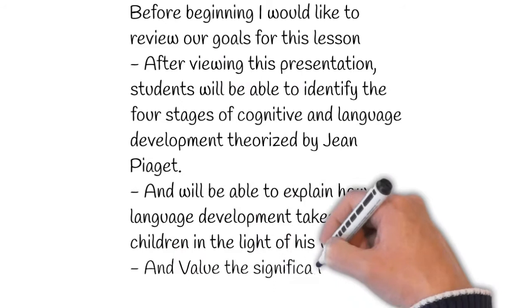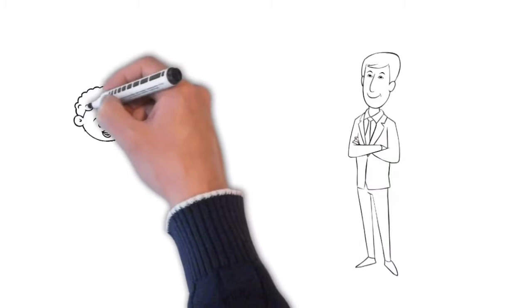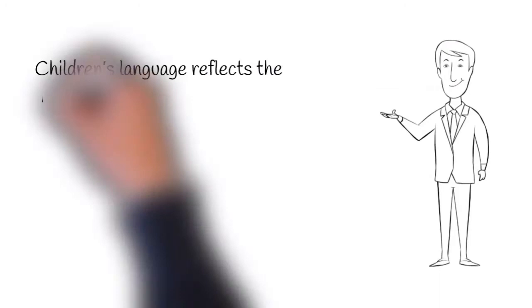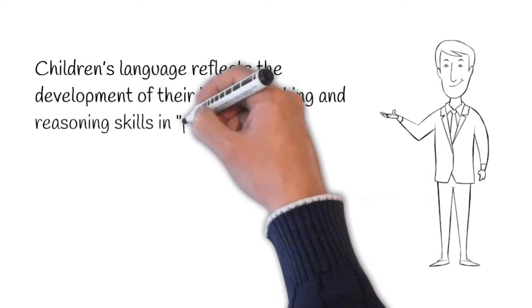Students will also value the significance of his contribution. Jean Piaget based his theory on the idea that children do not think like adults, as their understanding is quantitatively different from their older counterparts. This he associates with the different mental structures or schemas developed from infant to adult. Piaget's theory purports that children's language reflects the development of their logical thinking and reasoning skills in periods or stages, with each period having a specific name and age reference.